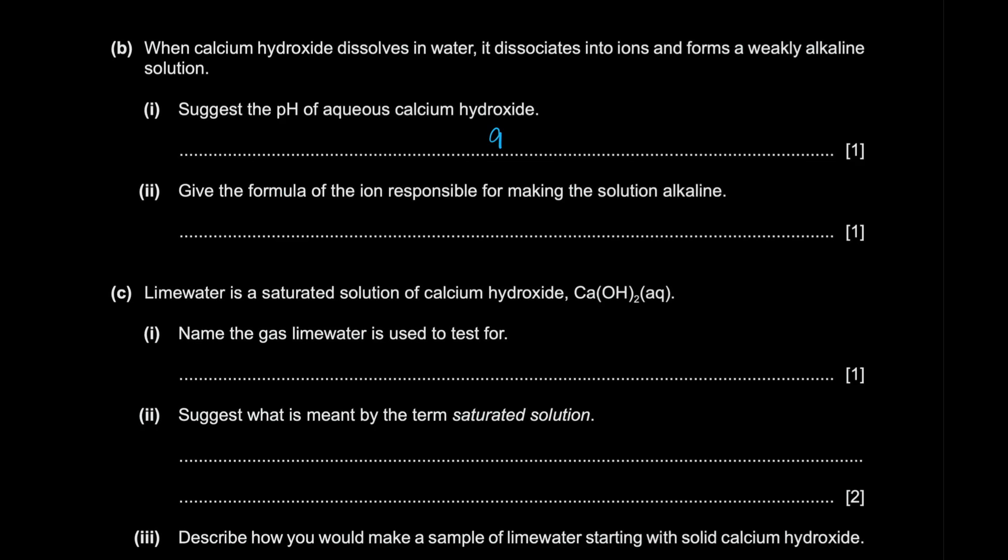Give the formula of the ions responsible for making the solution alkaline. Name the gas lime water is used to test for as lime water is saturated solution of calcium hydroxide. Well, not many people know this, but limestone is calcium carbonate. Lime, I believe it's just calcium hydroxide. And calcium oxide is just lime. So this is referred to as the whole lime thing. They used to test carbon dioxide.